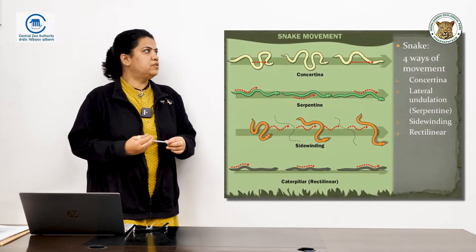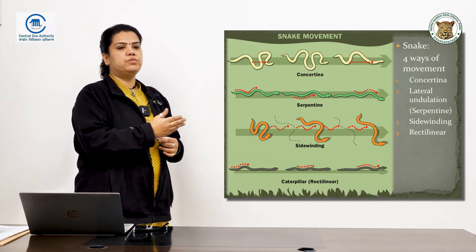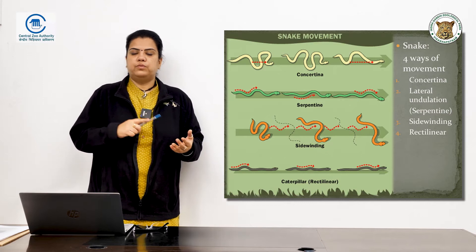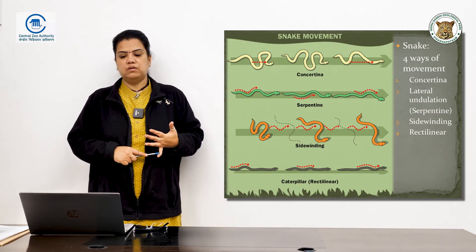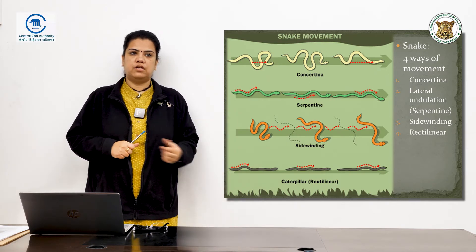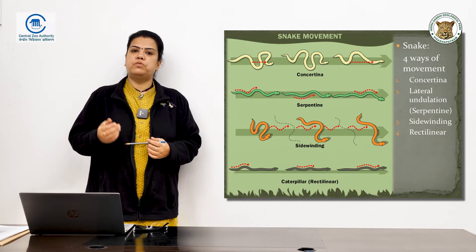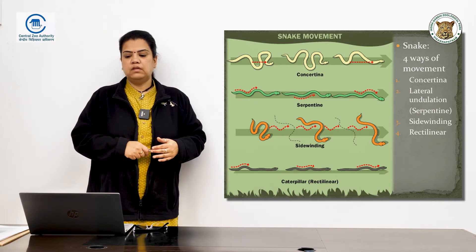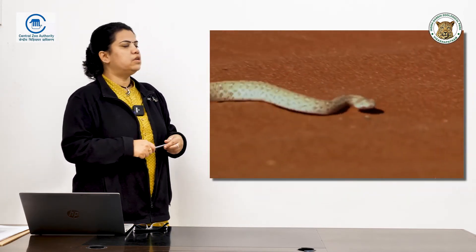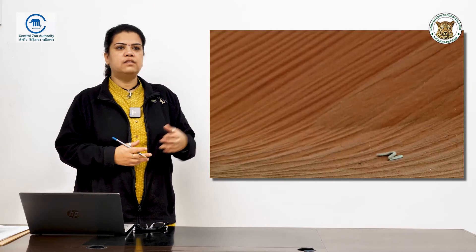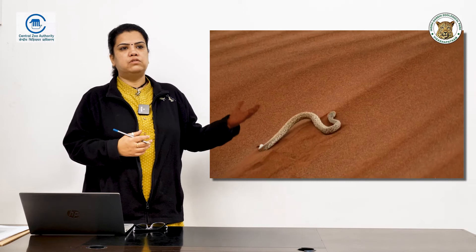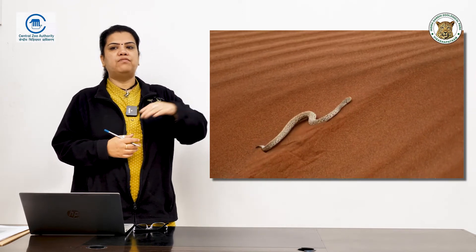When we think of snakes moving, we generally have just one movement in mind, but they actually have four different kinds of movement. The first is concertina movement. The second is lateral undulation, which is the most common one we see with snakes. The third is sidewinding, mainly used in species that live in dry, arid areas — because of the heat on the ground, this motion helps them navigate heat patches.